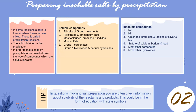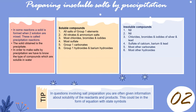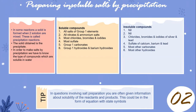Insoluble compounds include: chlorides, bromides, and iodides of silver and lead; and most other carbonates and hydroxides. The solubility rules for Group 1 salts and nitrates do not apply as exceptions in the insoluble category.